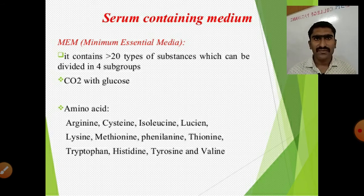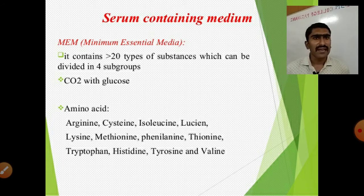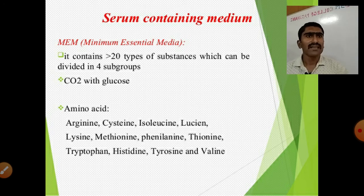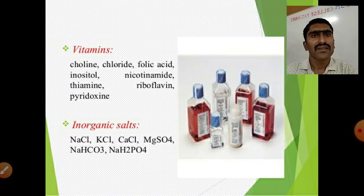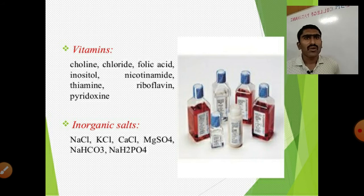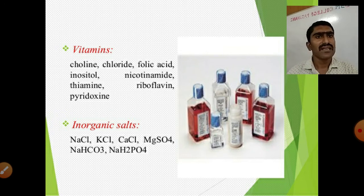MEM subgroups include: CO2 with glucose; amino acids such as arginine, cysteine, isoleucine, leucine, lysine, methionine, phenylalanine, threonine, tryptophan, histidine, tyrosine, and valine; vitamins such as choline chloride, folic acid, inositol, nicotinamide, thiamine, riboflavin, and pyridoxine.